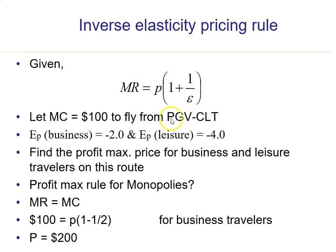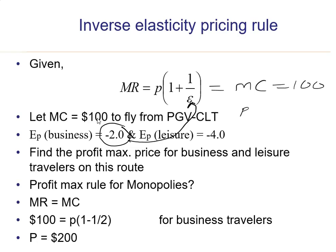For the business traveler, marginal cost is $100. We set MR — expressed as P times (1 + 1/ε) — equal to MC of $100. We also know the price elasticity for the business traveler is negative 2. So we have an expression where the only unknown is price.